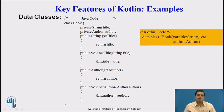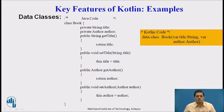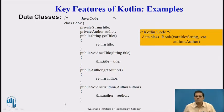Here are some examples which include key features of Kotlin. For data classes, in Java we have a class 'Book' which contains private string title, private author, and public getter and setter methods. But in Kotlin, it takes only a single line: 'data class Book(var title: String, var author: String)'. Instead of writing the full Java code, in Kotlin we write it in one line. This is a very important feature of Kotlin.